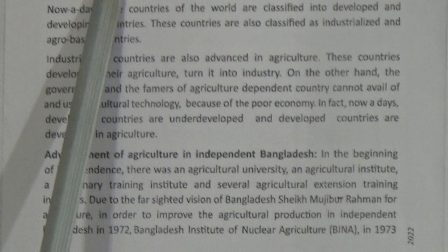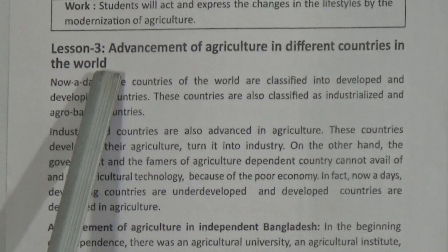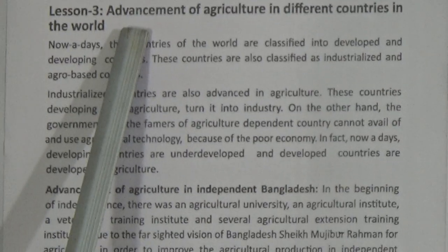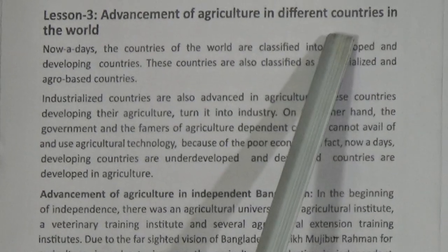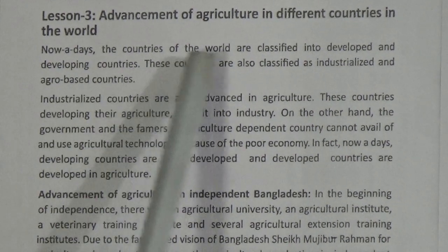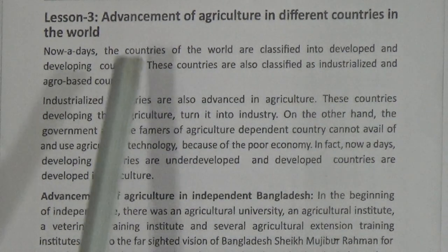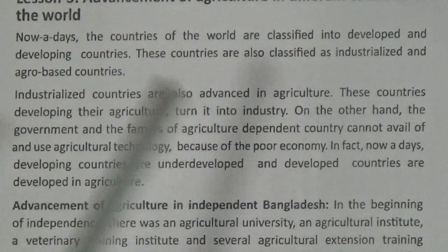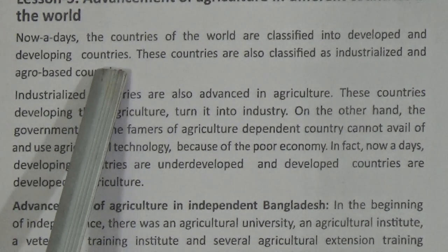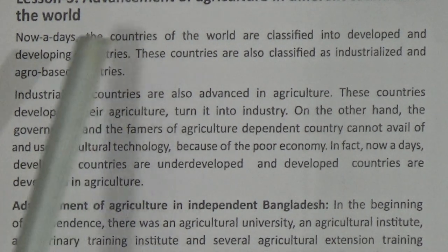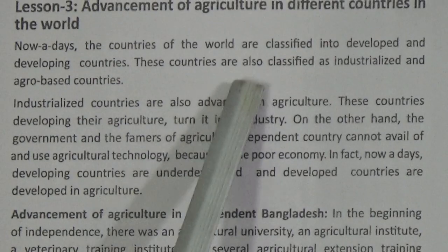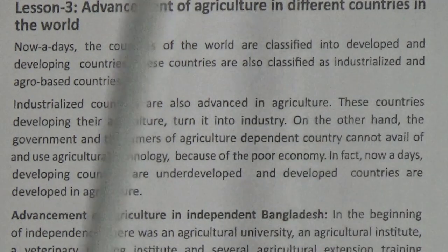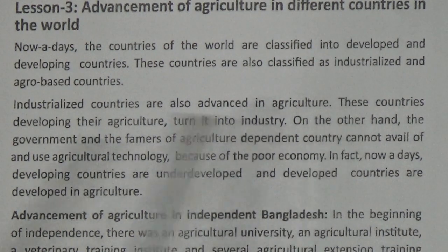Our topic is Chapter One, Lessons Three and Four. We start from Lesson Three. Please open your book to page number six. Lesson Three title is: Advancement of Agriculture in Different Countries in the World. Nowadays the countries of the world are classified into developed and developing countries. Our country is a developing country.